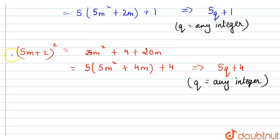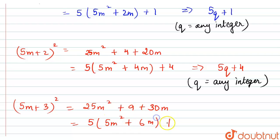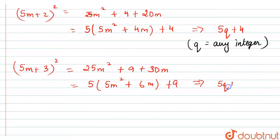If we take (5m plus 3)², we get 25m² plus 30m plus 9. Taking 5 common, we can write 5(5m² plus 6m) plus 9. This can be written in the form 5q plus 9, where q is any integer.